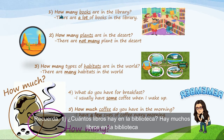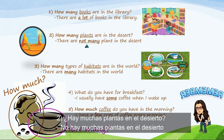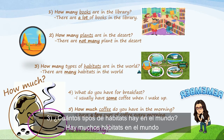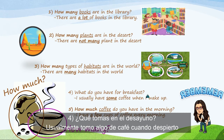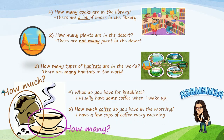Remember: How many books are in the library? There are a lot of books in the library. How many plants are in the desert? There are not many plants in the desert. How many types of habitats are in the world? There are many habitats in the world. What do you have for breakfast? I usually have some coffee when I wake up. How much coffee do you have in the morning? I have a few cups of coffee every morning. How much — uncountable; how many — countable.